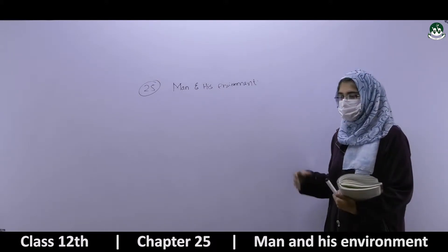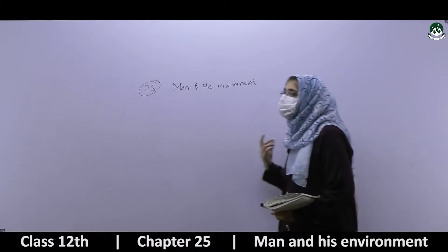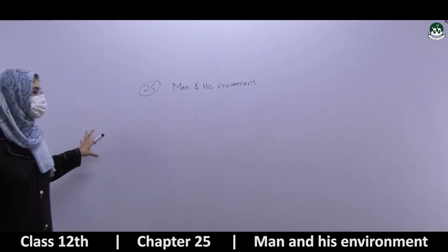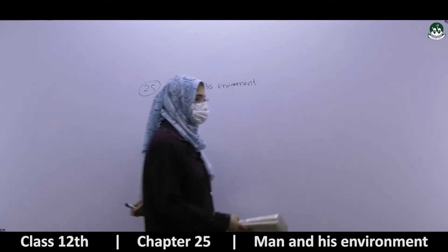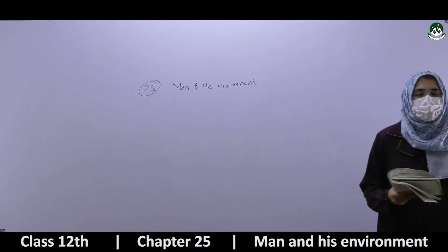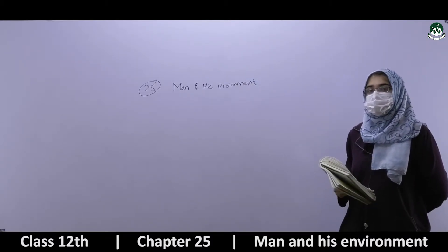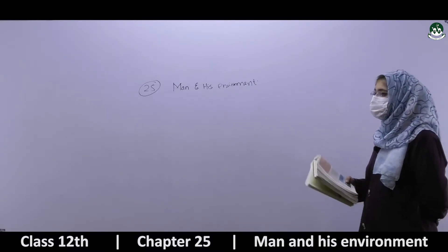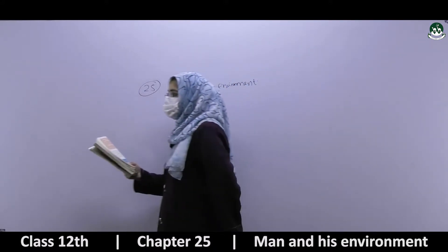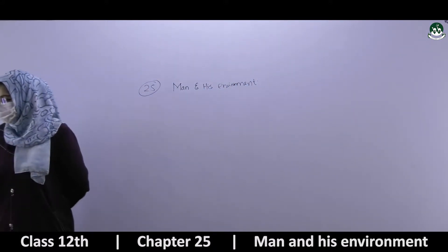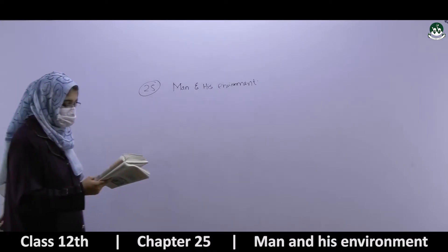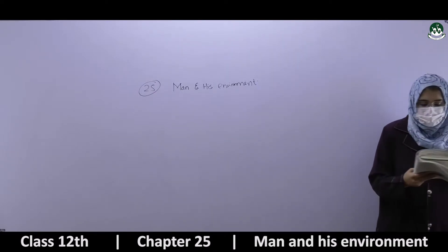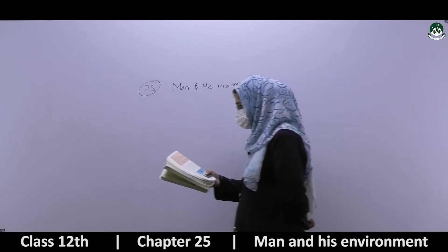This is a very theory-based chapter. Theory-based questions come from short and long answers, and it can also come from MCQs. Starting from the introduction, the purpose of studying this unit is to enhance the level of understanding about ecology and human interaction with his environment. This will help to understand the effects of rapidly growing human population and his activities.